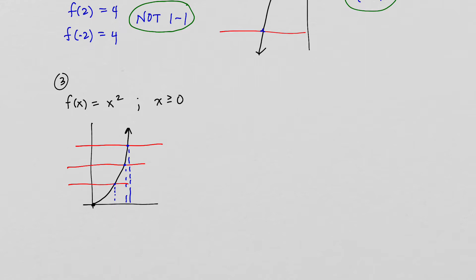This is actually a pretty common thing done in trigonometry. When you define the inverse trigonometric functions, you need to restrict the domain of your trig functions so that you have a one-to-one function. More about that later.